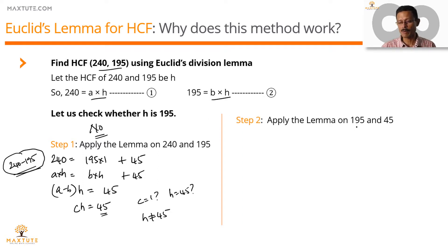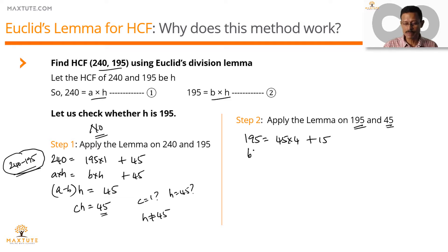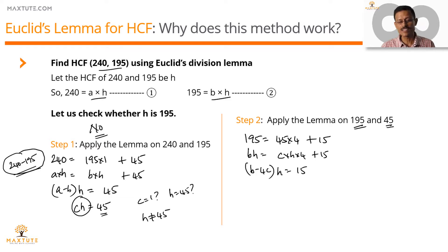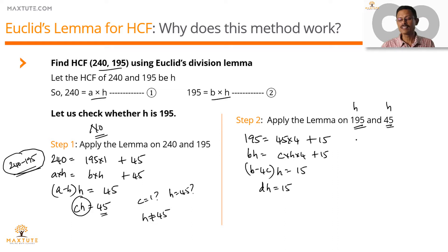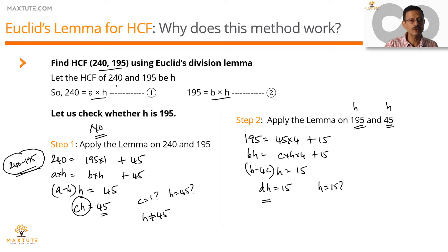Let's move on to step two of the lemma. In this step we apply the lemma on 195 and 45: 195 = 45 × 4 + 15. Writing 195 as B·H and 45 as C·H, we get B·H = 4·(C·H) + 15, which gives (B − 4C)·H = 15. Since B and C are integers, B − 4C is an integer; let's write it as D·H = 15. So 15, the difference between 195 and 4 times 45, is also a multiple of H. Can D equal 1, meaning can the HCF equal 15? Check: does 15 divide both 240 and 195? Yes, it does. Therefore the HCF is equal to 15.